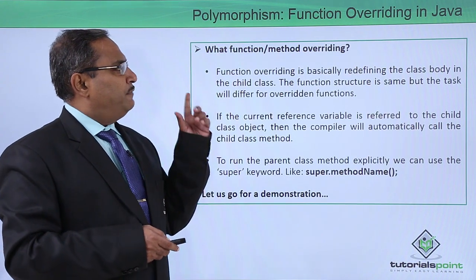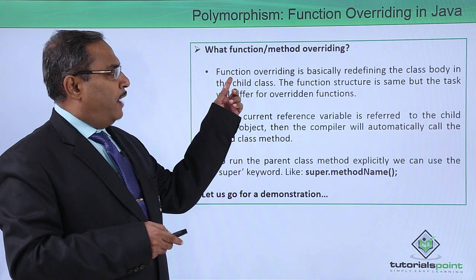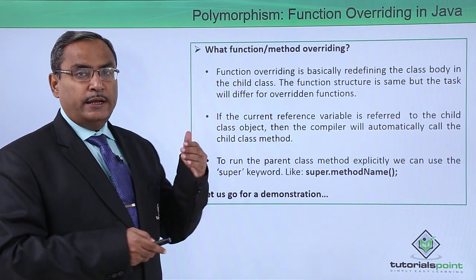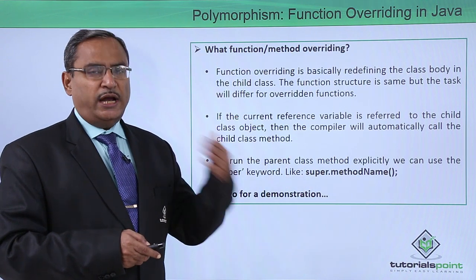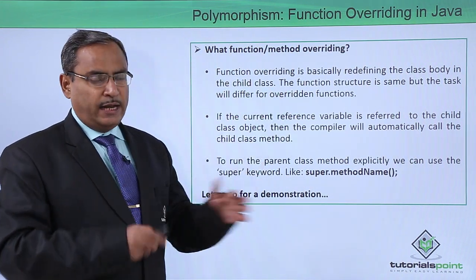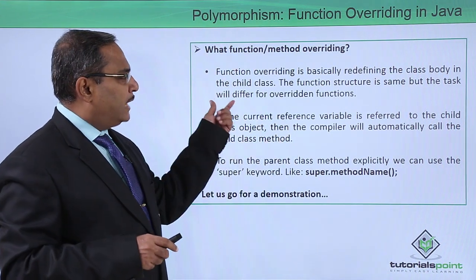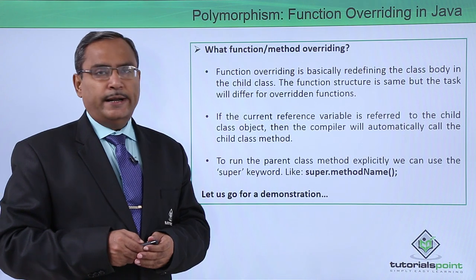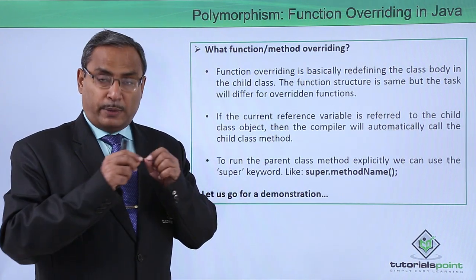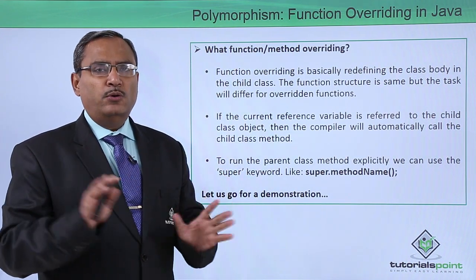What is function or method overriding? Function overriding is basically redefining the function body in the child class — the child class meaning the derived class. The function structure is the same, meaning the prototype and signature of the function will remain the same, but the task will differ for the overridden functions. That means the body of the function will be different, while the signature, prototype, and function name will all remain the same.